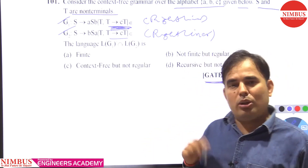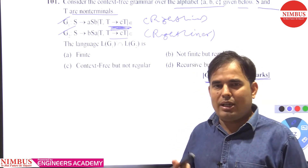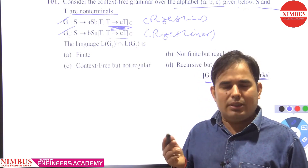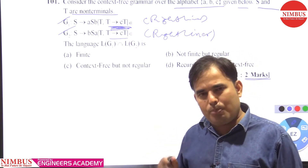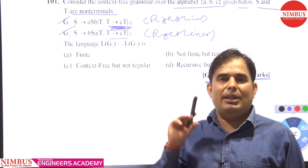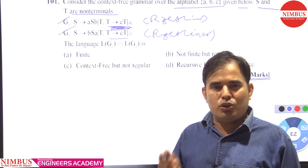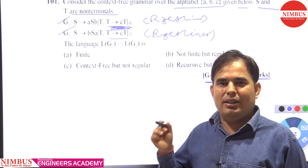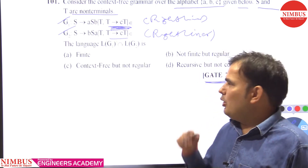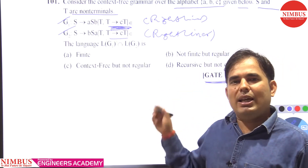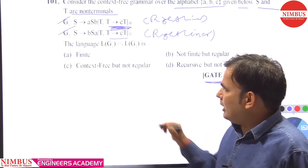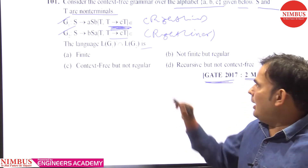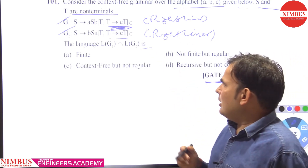As we know, the closure properties of regular languages — regular languages are closed under all operations like intersection, concatenation, subtraction, and union, rather than just subset. So L(G1) ∩ L(G2) is also regular.